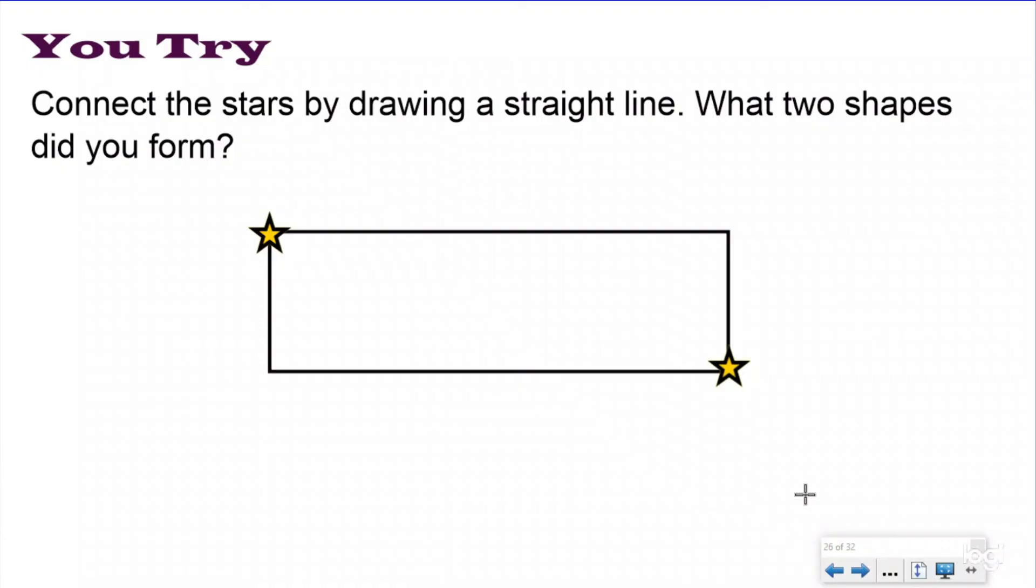So here I want you to do this You Try. This says connect the stars by drawing a straight line. What two shapes did you form? So if you decompose this rectangle by putting a straight line from the star to the other star from vertex to vertex, you're going to see two shapes. What shapes were those? Go ahead and pause the video, try it out on your notes, and then push play and you can check your work with me.